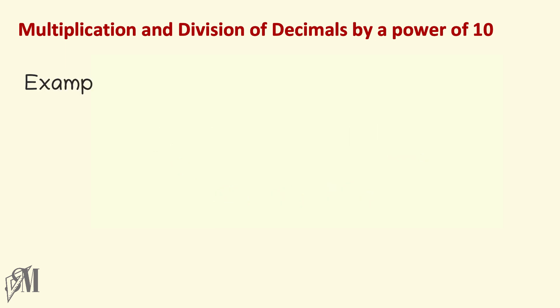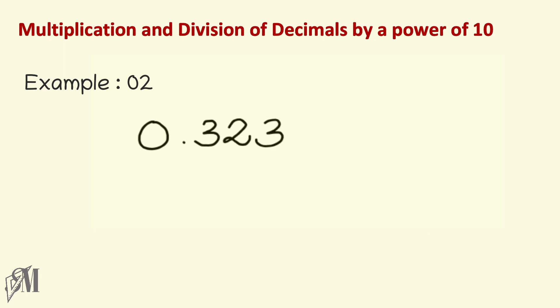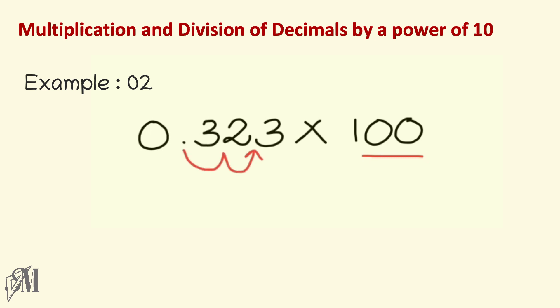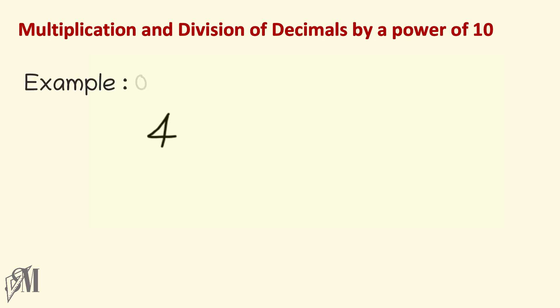The next example is 0.323 multiplied by 100. It is clear that 100 has two zeros, so we move the decimal point to the right twice, giving the answer 32.3.